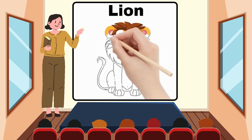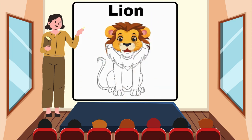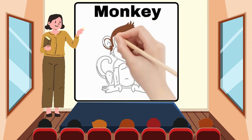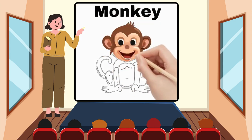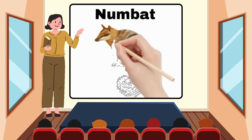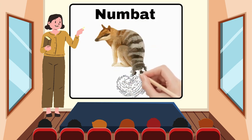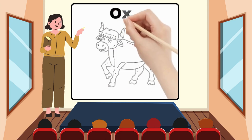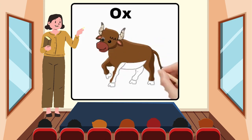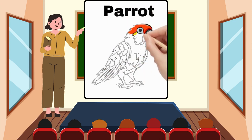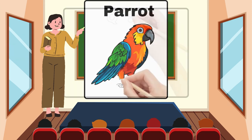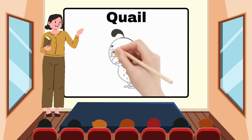L for Lion. M for Monkey. N for Numbat. O for Ox. P for Parrot. Q for Quail.